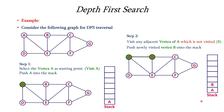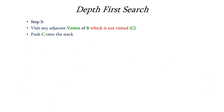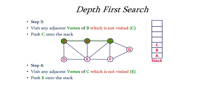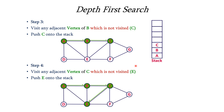Next we repeat the same step. We consider B at the top of the stack. The adjacent vertices of B are C and E, both non-visited, so we take only one — we consider C and push it onto the top of the stack. Then we check the adjacent vertices of C, which is now at the top of the stack. The unvisited adjacent vertices of C are E, F, and G. We consider E and push it onto the top of the stack.